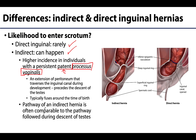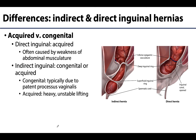The pathway of an indirect hernia is comparable to the pathway followed during the descent of the testes. Indirect inguinal hernias are sometimes referred to as congenital, referring to the fact that the processus vaginalis did not become occluded at birth, thus predisposing that type of herniation to occur.